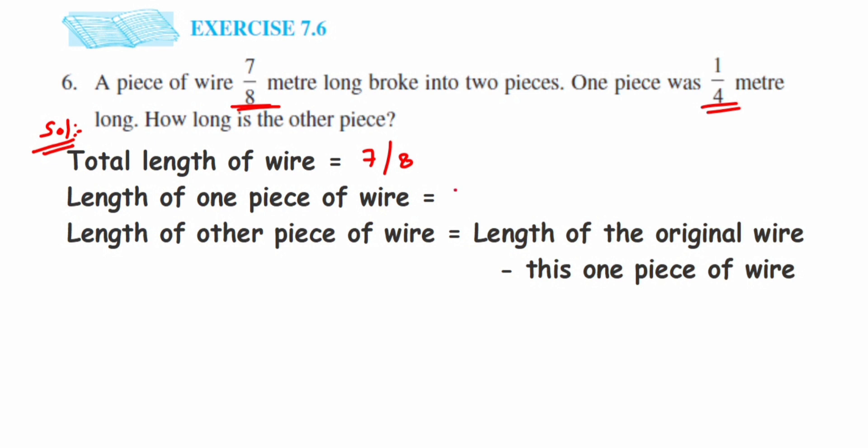One piece of wire is 1/4 meter. Out of two pieces, one piece length is 1/4, and we have to find the other piece. So from the total length, we will subtract the length of one piece to get the other piece. It's very simple: from the total length of the original wire, we're going to subtract the length of this one piece of wire.